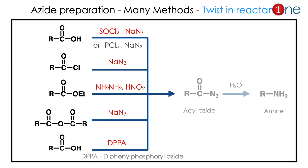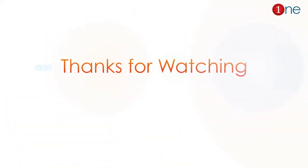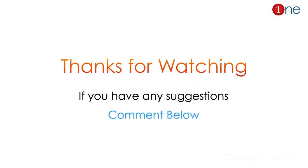The starting material can be an acid, acid chloride, ester, or anhydride. The reagent can be azide, hydrazine, or DPPA — diphenyl phosphoryl azide. The final product: just remove CO and write the amine. That's all from this video. I hope it was useful, thanks for watching.